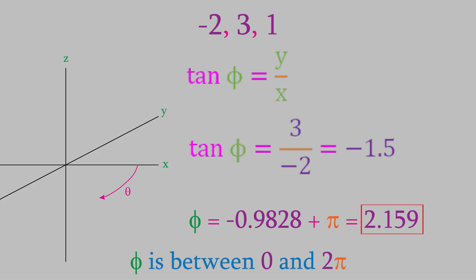This is important to remember. If you ever end up with a negative value for phi, just add pi to it in order to convert it to a value in the range between 0 and 2 pi. Let's try one more calculation with spherical coordinates.